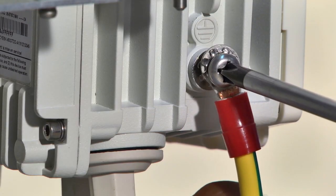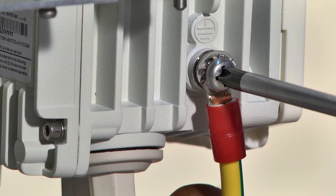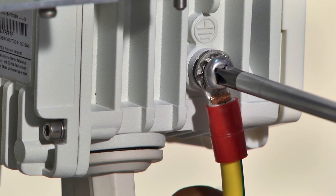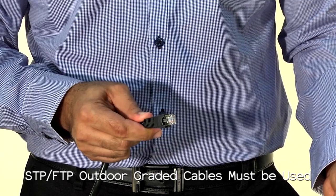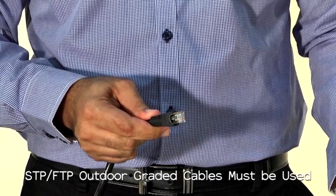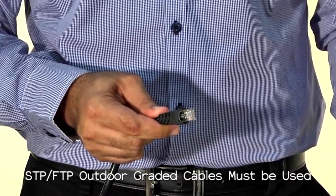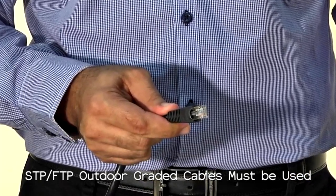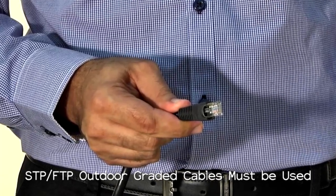The ODU must be grounded using a copper cable of at least 16 AWG and in accordance with local electrical codes. All cables connected to the ODU should be shielded and terminated by metallic connectors. They should be outdoor graded with category 5 or 6 UV protection.